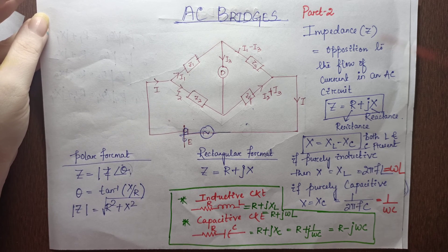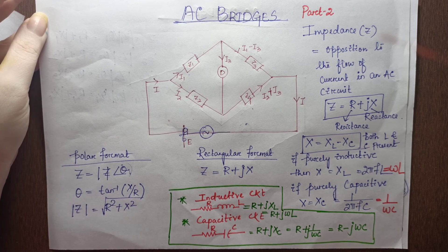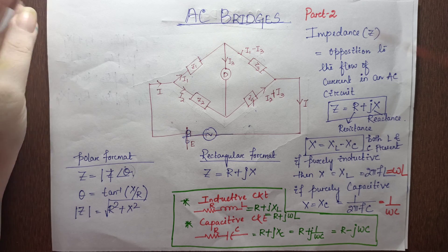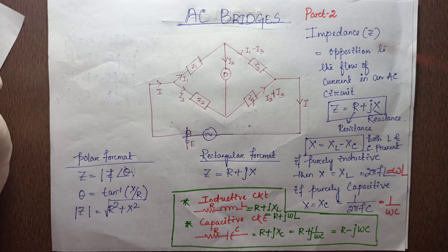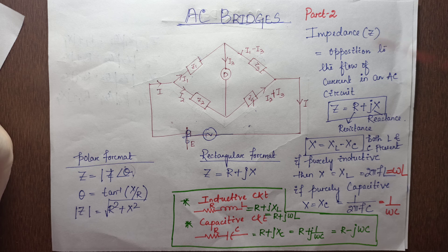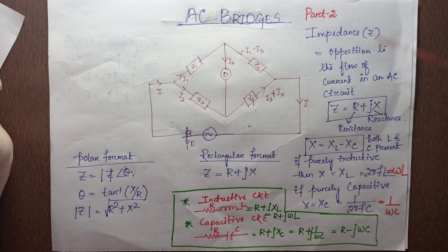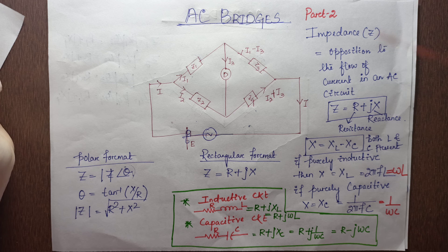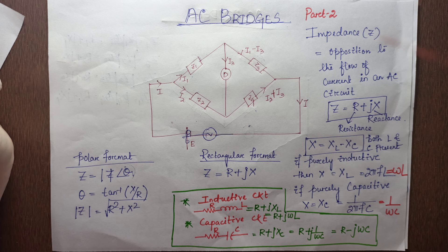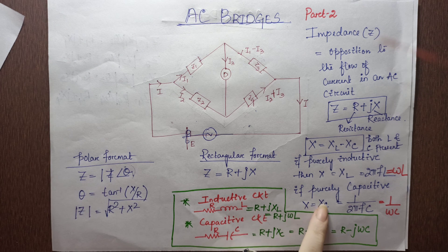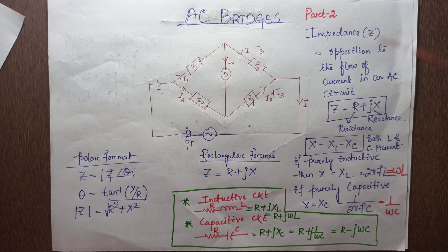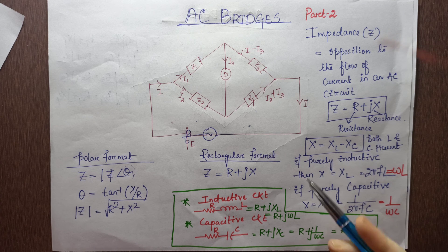Here in AC circuits, you have resistance and reactance, and reactance is usually given by inductance and capacitance. When it is a capacitive reactance, it is represented by the symbol XC.